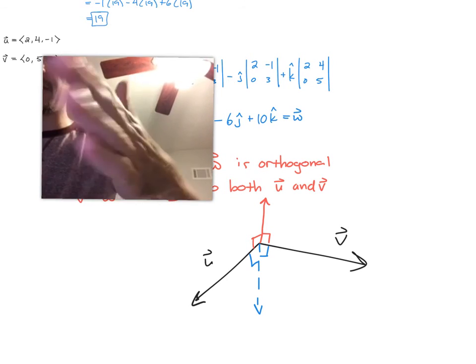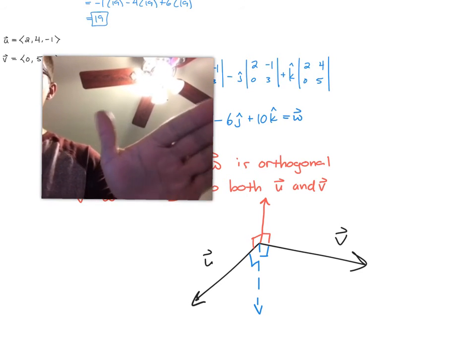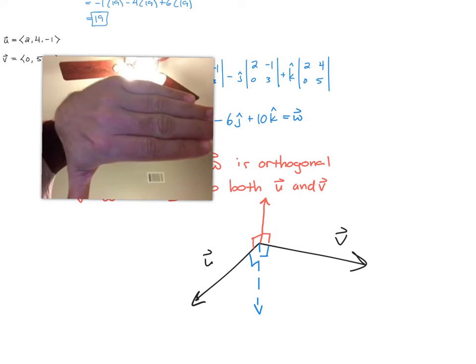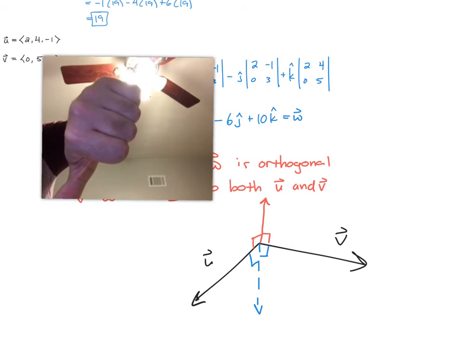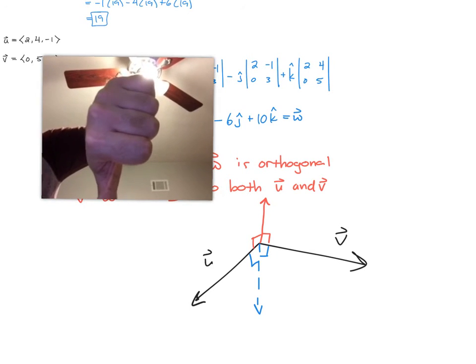If we did v cross u, using the right-hand rule, in order to make it so that our fingers curled to u, we would have to turn our hand over so the fingers start at v. Then we would curl our fingers this way to get to u, so v cross u would be going down.